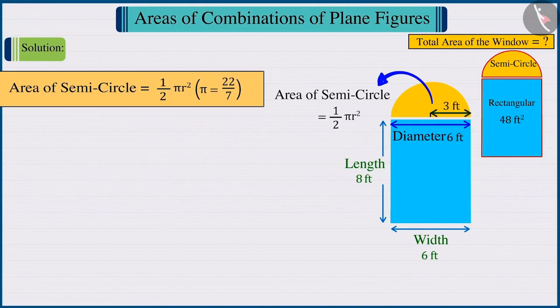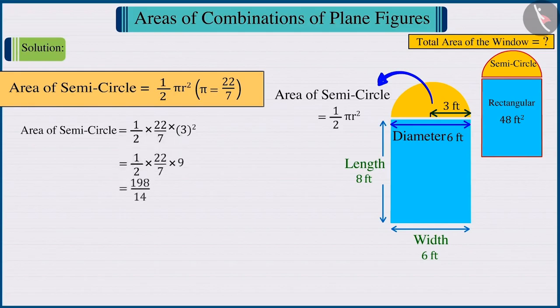Hence, placing the value of r in the formula for finding the area of a semi-circle, and solving, we obtain the area of the semi-circle, i.e., the area of the upper portion of the window, which is 14.14 square feet.